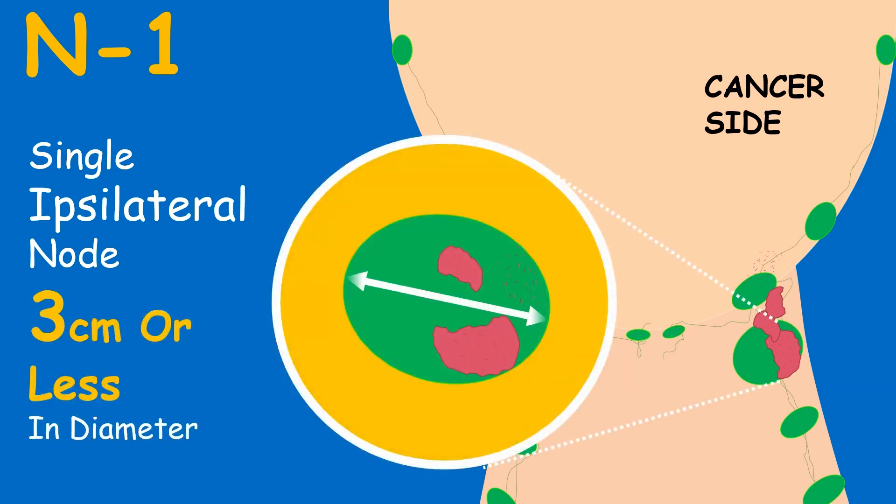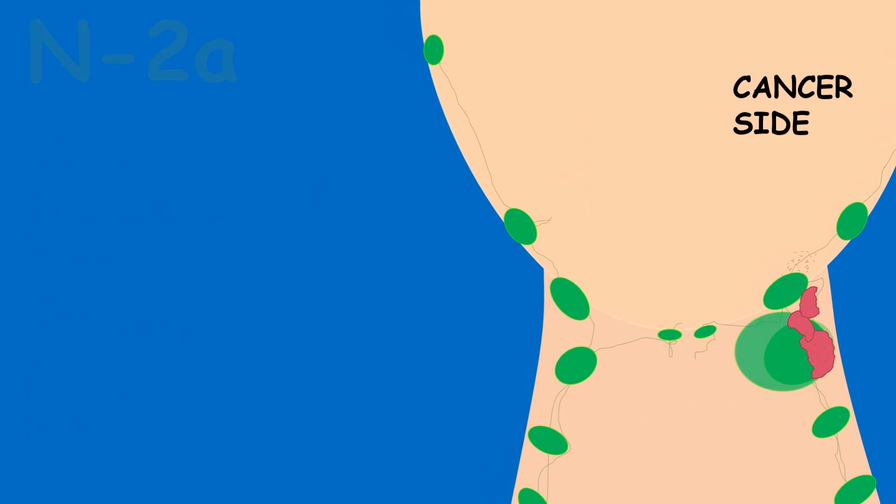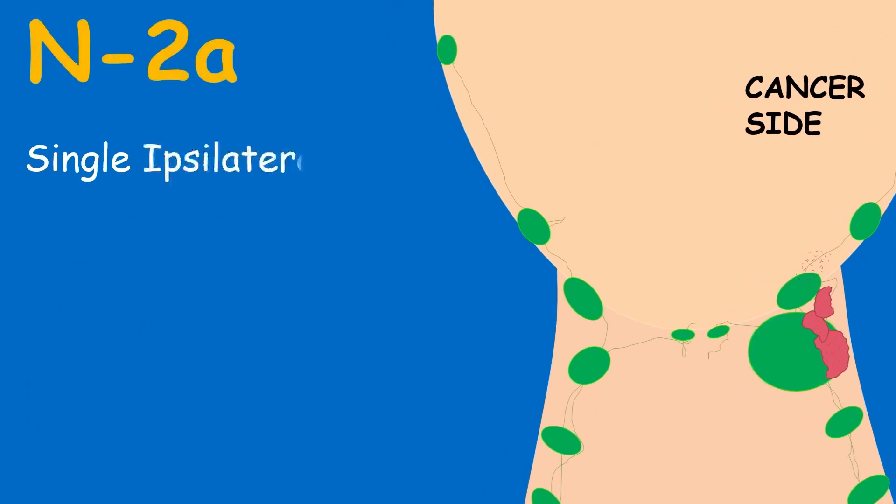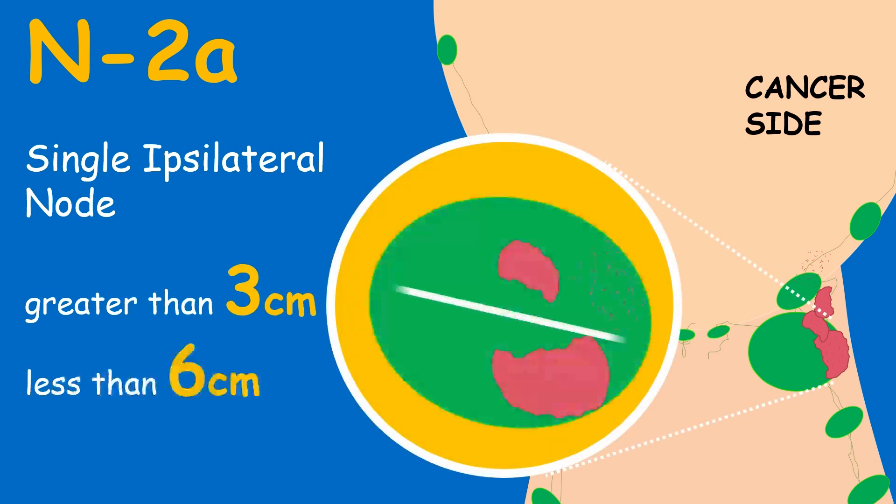In N2A, again a single ipsilateral node is involved but with a size greater than 3 centimeters but less than 6 centimeters.